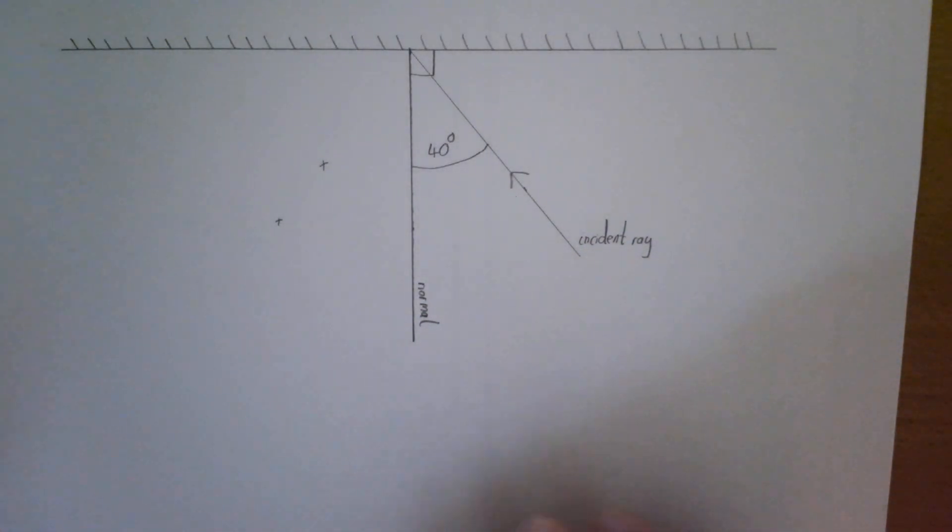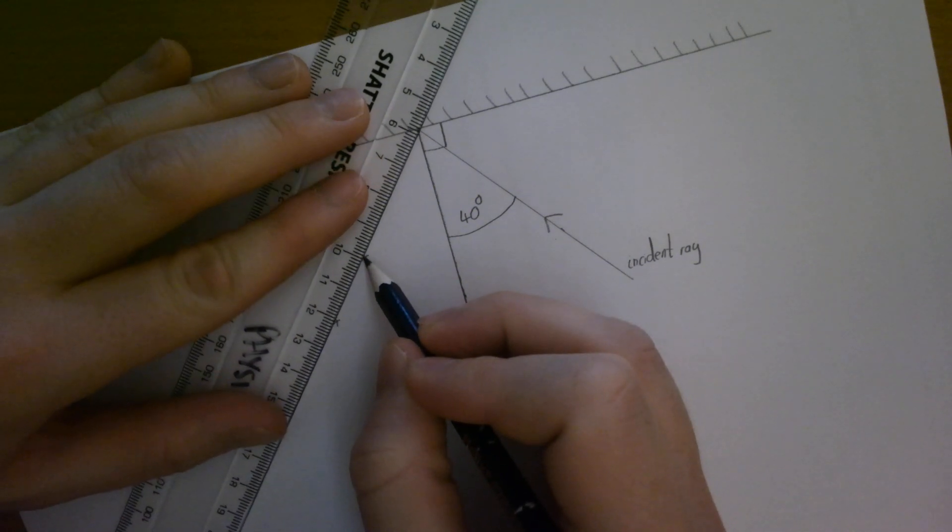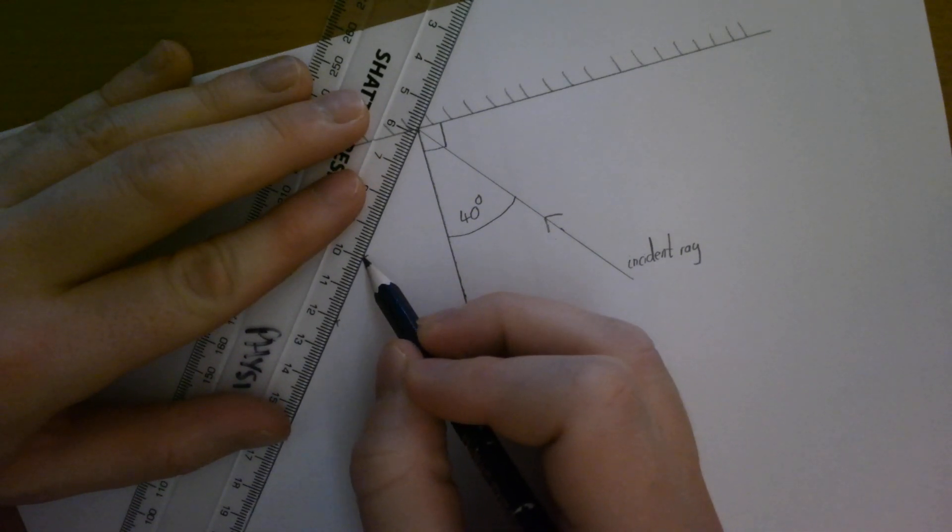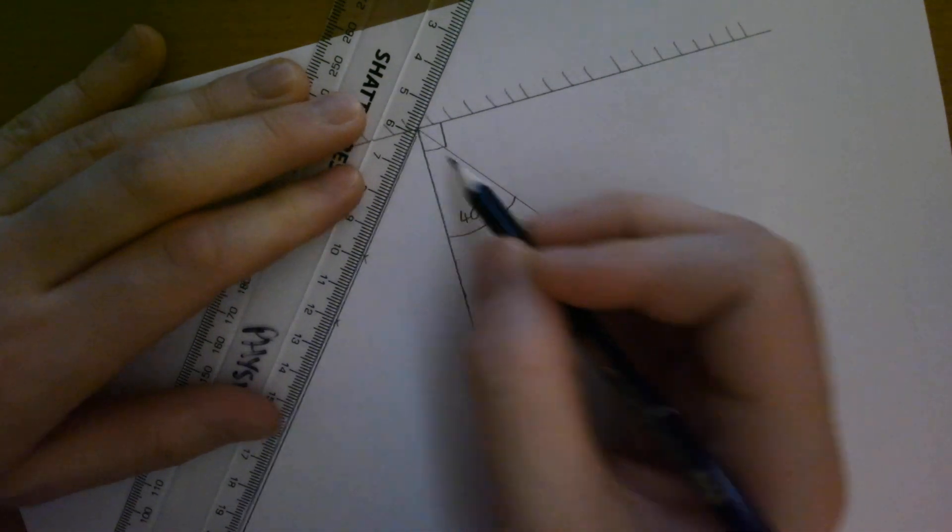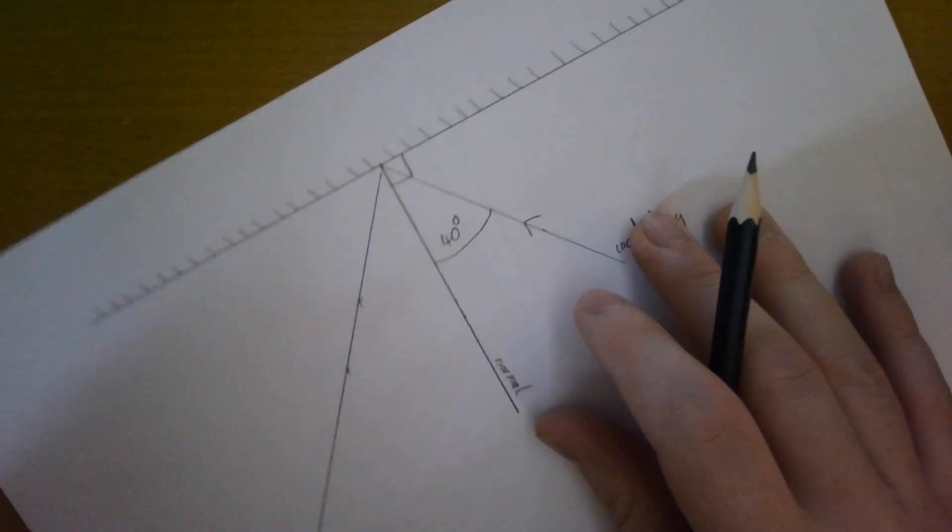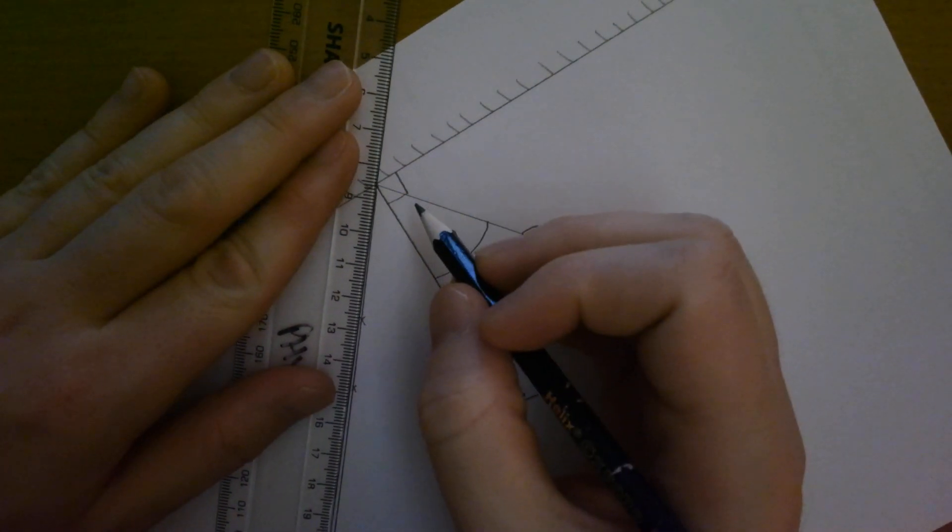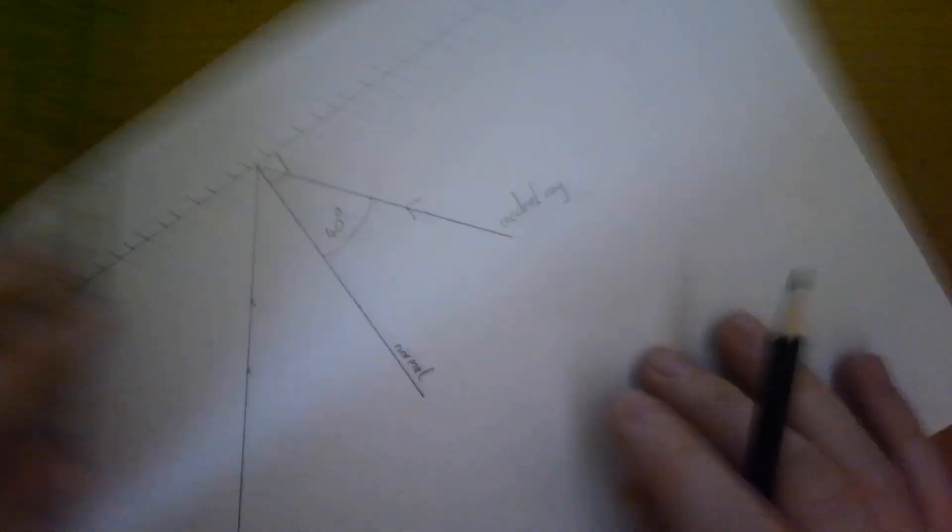Once I've drawn those, I can remove this. What I'm going to do is connect up my two dots that I have drawn, like that. Connect that all the way up. Lovely.